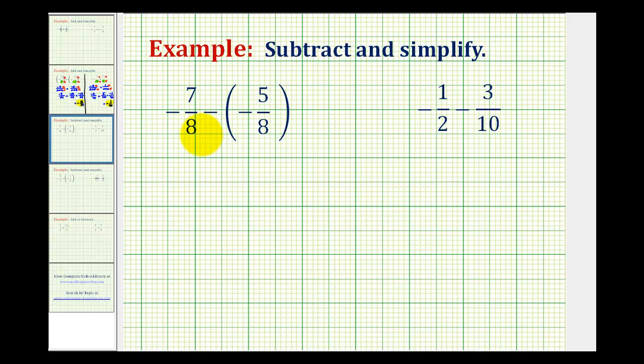Now we'll look at two examples of subtracting signed fractions. When subtracting fractions, we do have to have a common denominator. Looking at our first example, we have negative 7 eighths minus negative 5 eighths. Notice we do have a common denominator of 8.